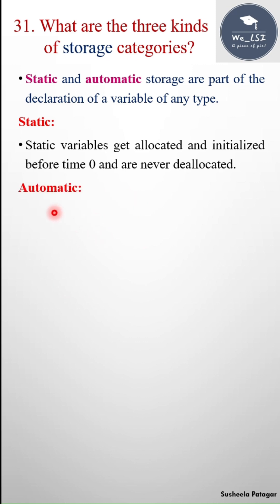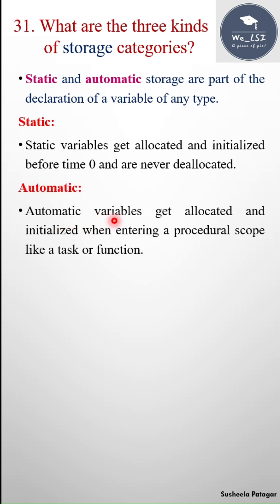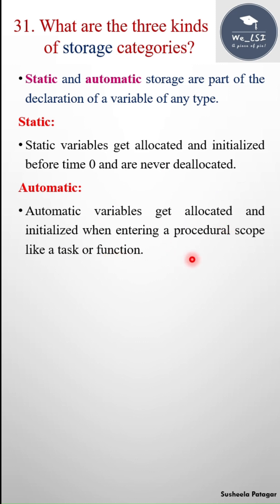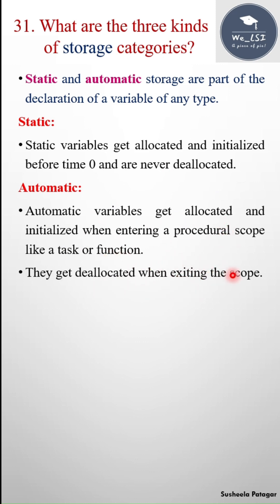Automatic means automatic variables get allocated and initialized when entering a procedure scope like a task or function, and they get deallocated when exiting the scope. For example, automatic int a — a is a variable of type int and it's automatic.